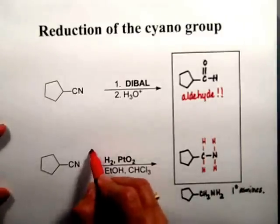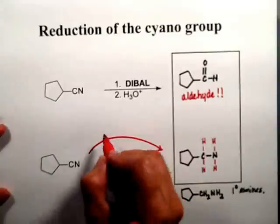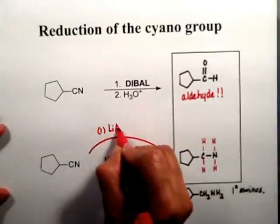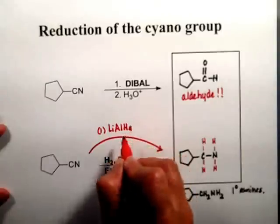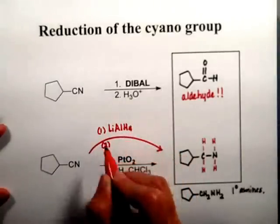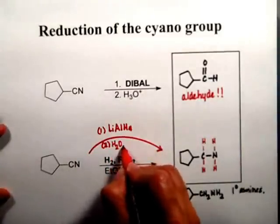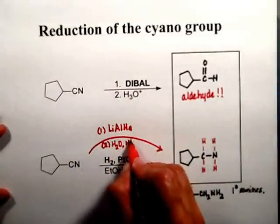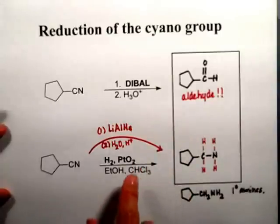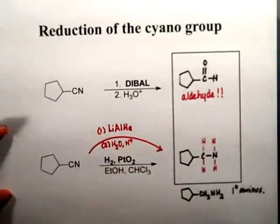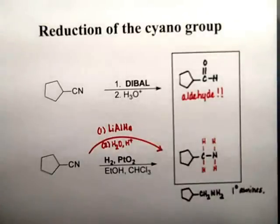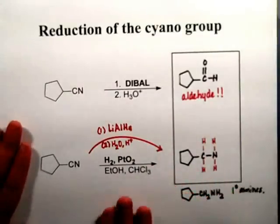This reaction can also be done with lithium aluminum hydride, which is a two-step process: you add the lithium aluminum hydride using a syringe with no moisture whatsoever, and then you quench the reaction. This is the end of the second part — I hope you enjoyed it. Just make sure that you know everything in this lecture.